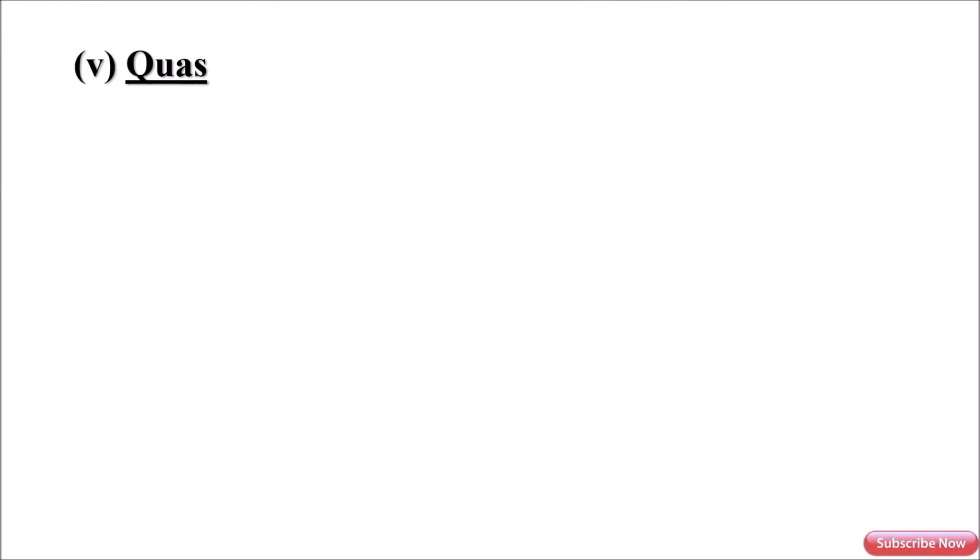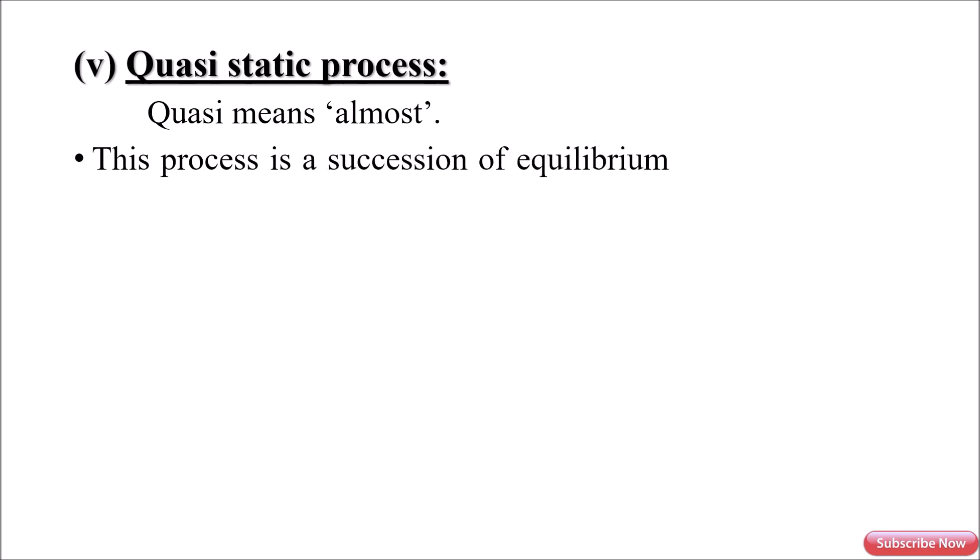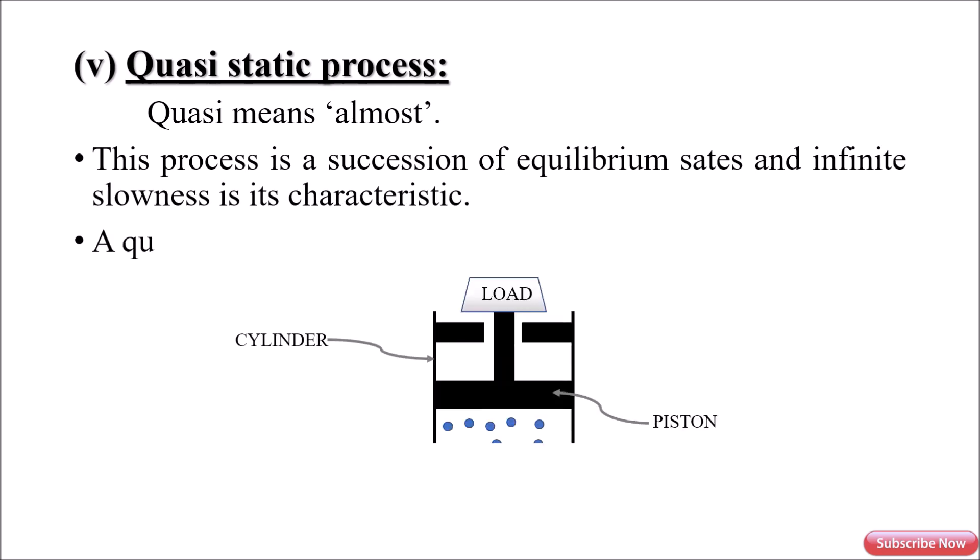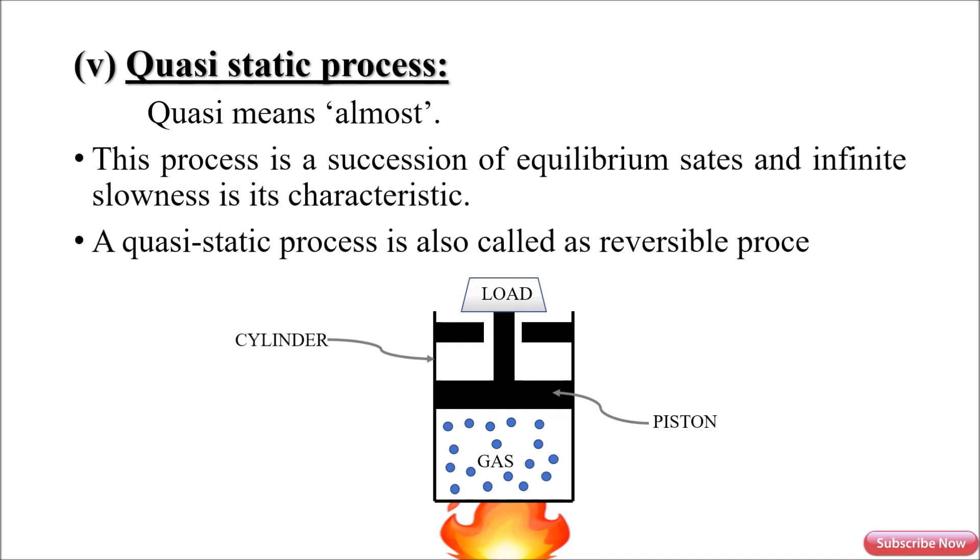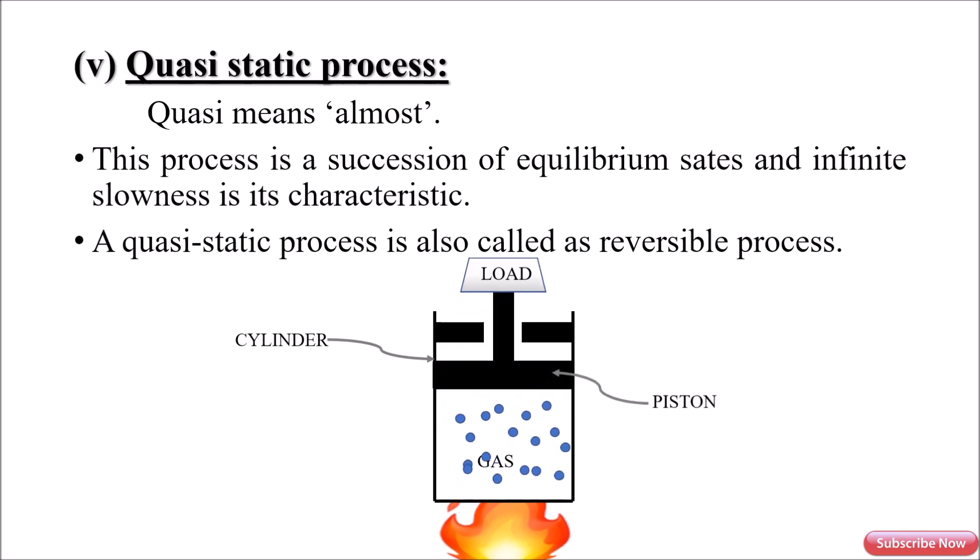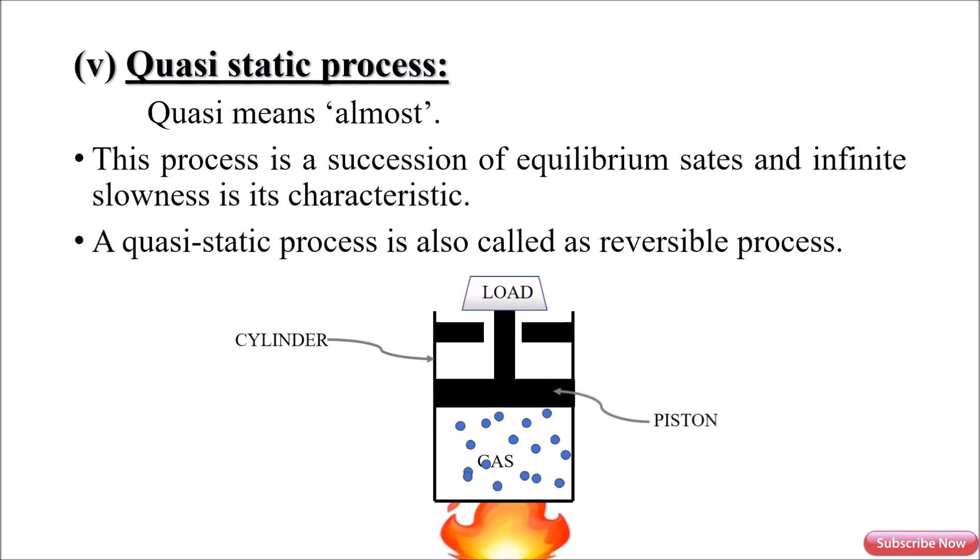Last type of process is quasistatic process. Quasi means almost. This process is a succession of equilibrium states and infinitesimally slow. Slowness is its characteristic. A quasistatic process is also called a reversible process. It is the same as that of reversible process, but slowness is its characteristic.